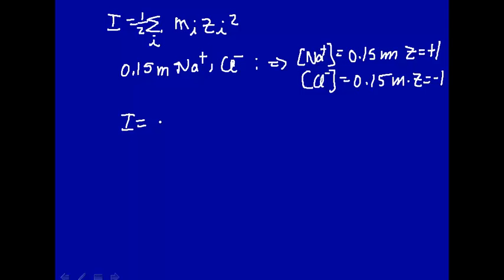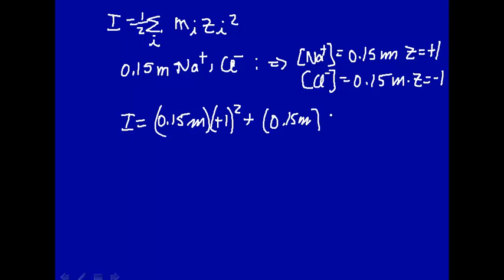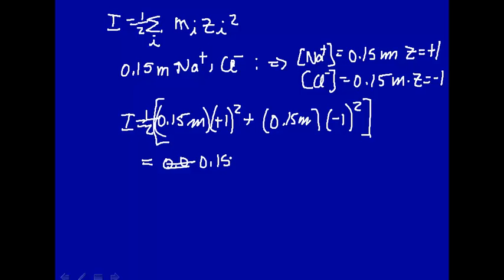The ionic strength is one-half times the sum: sodium first — concentration 0.15 molal, charge +1 squared — plus chloride, 0.15 molal, charge -1 squared. So the ionic strength of a solution that dissociates into a single positive and single negative species is just 0.15 molal — the same as the solution concentration, since you're taking half and adding two equal terms.